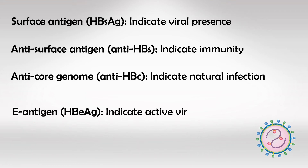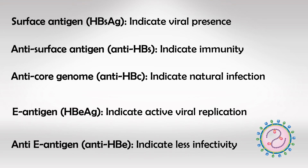The other marker we have is called hepatitis B E antigen, which the virus uses during active replication, so the presence of this antigen indicates active replication and high infectivity. The presence of anti-HBe indicates less activity of the virus and less infectivity, but the presence of antibodies only indicates the prior presence of antigen. So if a patient has HBeAg or anti-HBe, they are infected and infective.